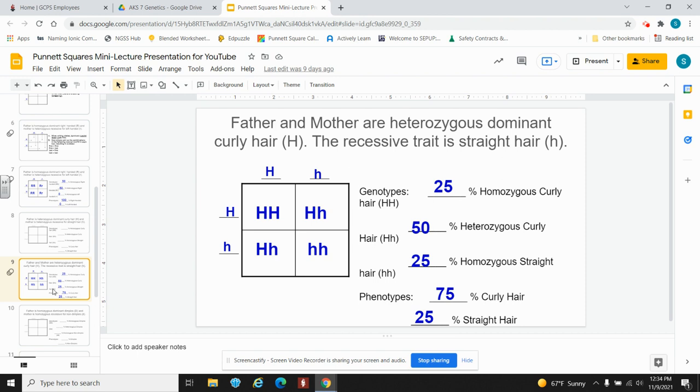So in this particular instance, the phenotype, three of four of the boxes, 75% are going to be curly, but represent two different genotypes. And one of four of the boxes, 25% are going to have straight hair representing that one box.